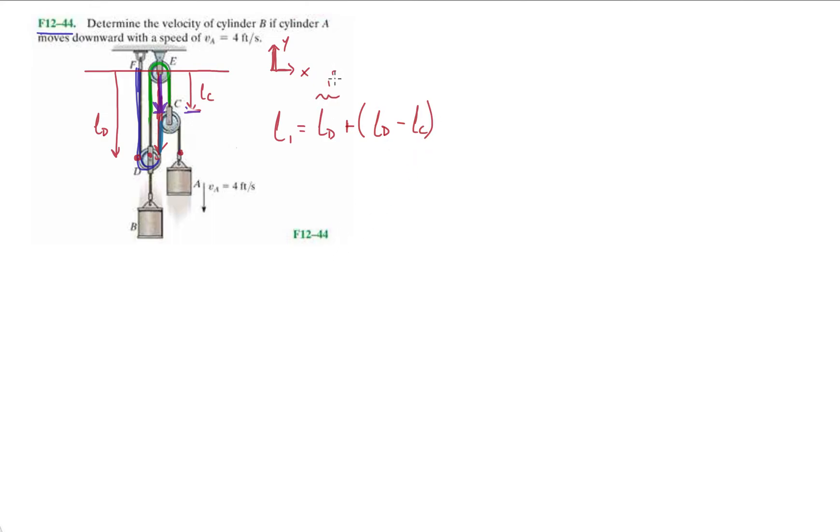So we have plus ld minus lc. Okay. There's the first part, second part of the string. And then the last part of the blue string that I kind of deleted. Right. We have ld minus lc. Okay.